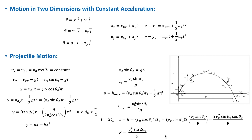Because the x component of velocity is constant throughout the motion, it is the y component that changes due to gravity. At the maximum height the y component of velocity equals zero, so substituting into the velocity equation we can solve for t₁.